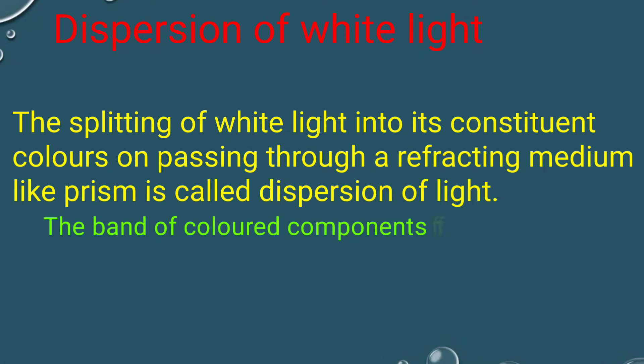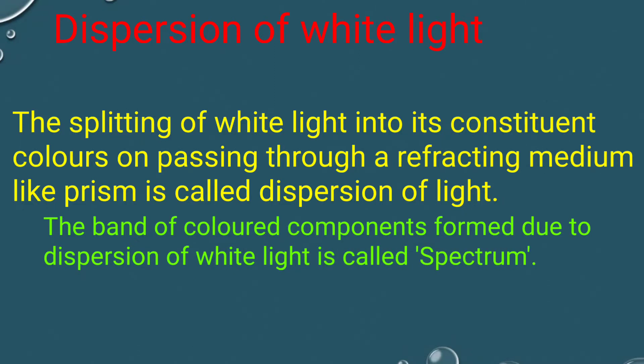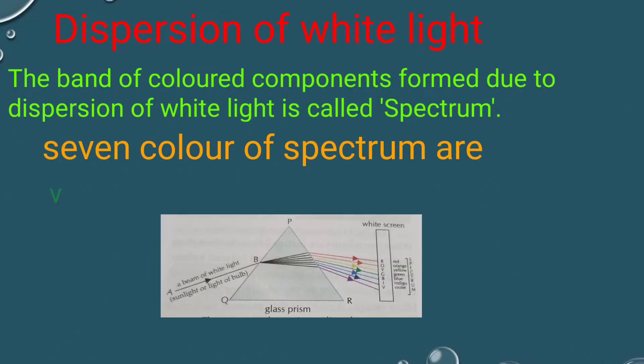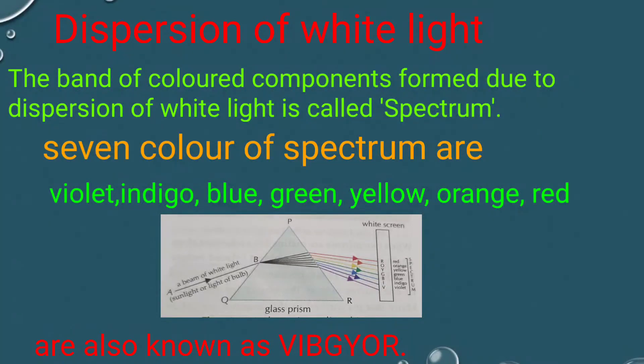The band of colored components formed due to dispersion of white light is called spectrum. Seven colors of spectrum are violet, indigo, blue, green, yellow, orange, red, also known as VIBGYOR.